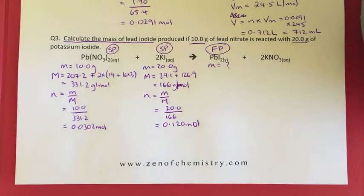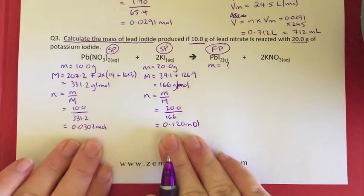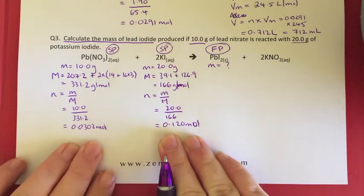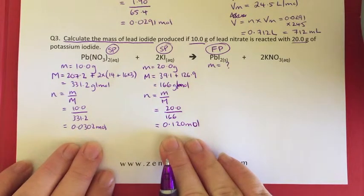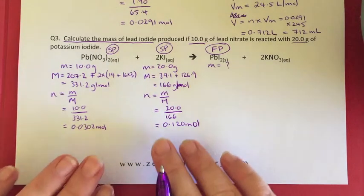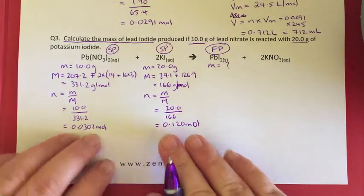Here are our two starting points. We have 0.0302 mole of lead nitrate and 0.120 mole of potassium iodide. This can sometimes be the trickiest part of the whole question. So let's take one at a time.